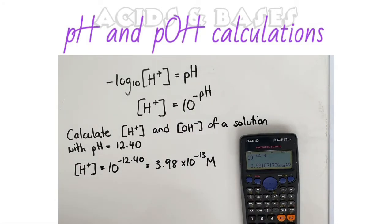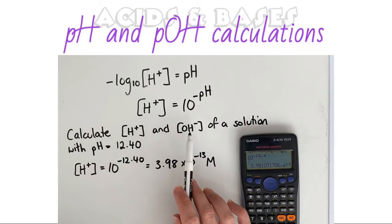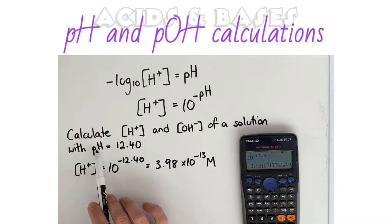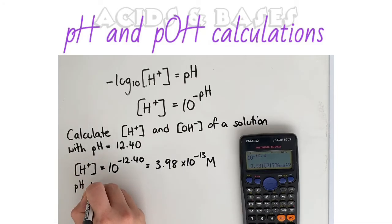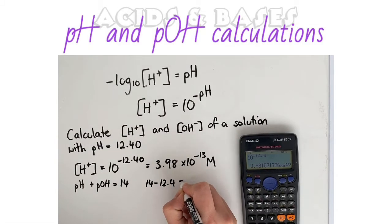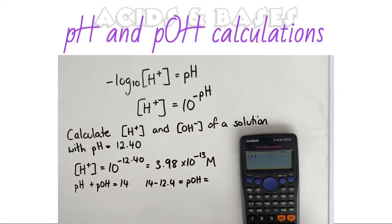Now the second half of that question is to calculate the concentration of the hydroxide ions. Now we're not given pOH, we're given pH, but remember we can convert that. So knowing that our pH and our pOH equals 14, we can do 14 minus 12.4, which is going to give us our pOH value, and that is 1.6.